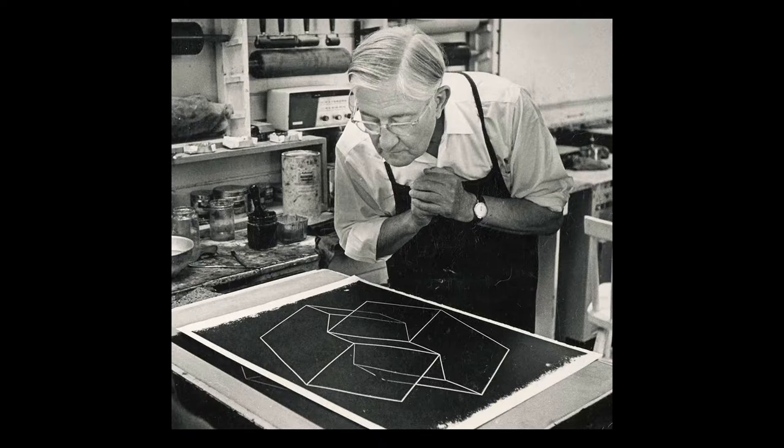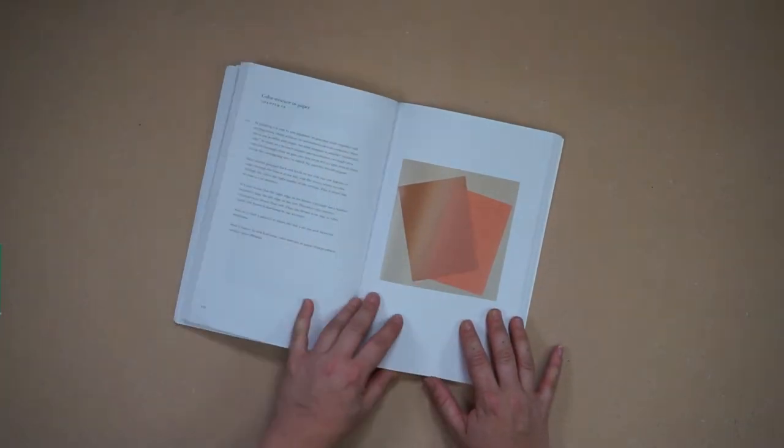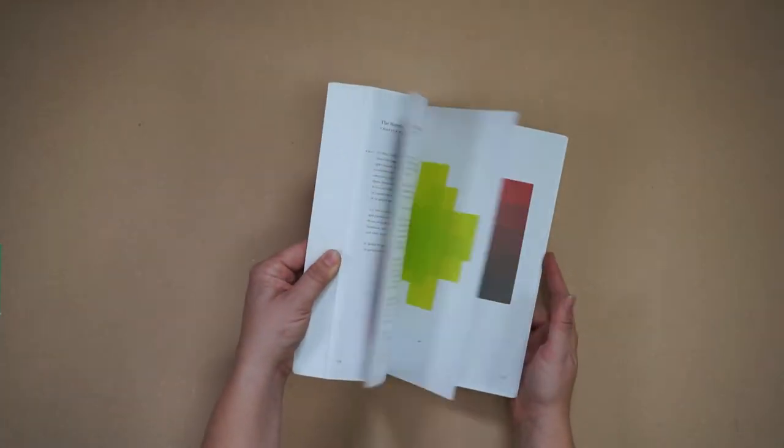Joseph Albers was a famous painter born in 1888 in Germany. He was also a very influential teacher, and brought his ideas and work to the United States. These ideas and theories about color can be found in his book called Interaction of Color.